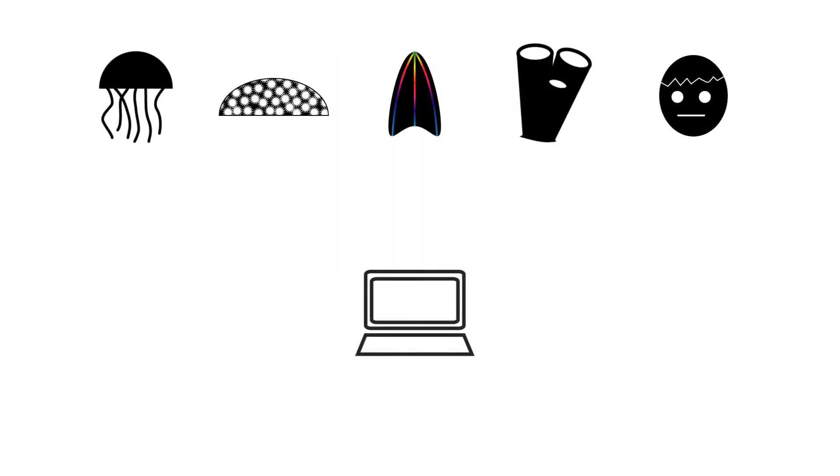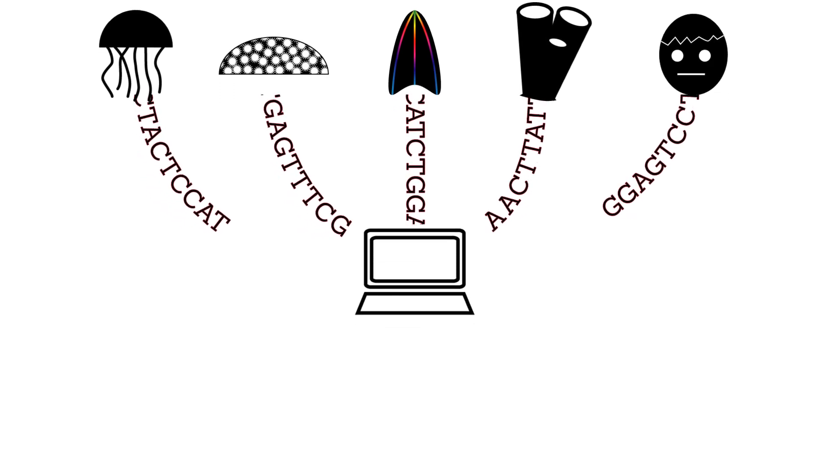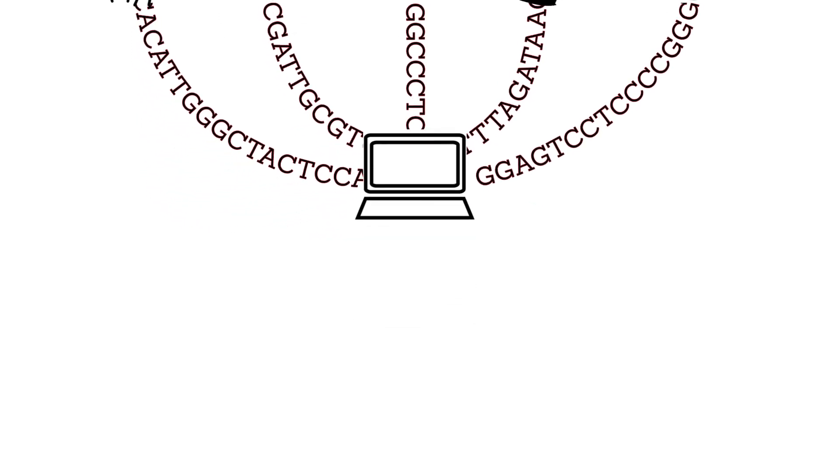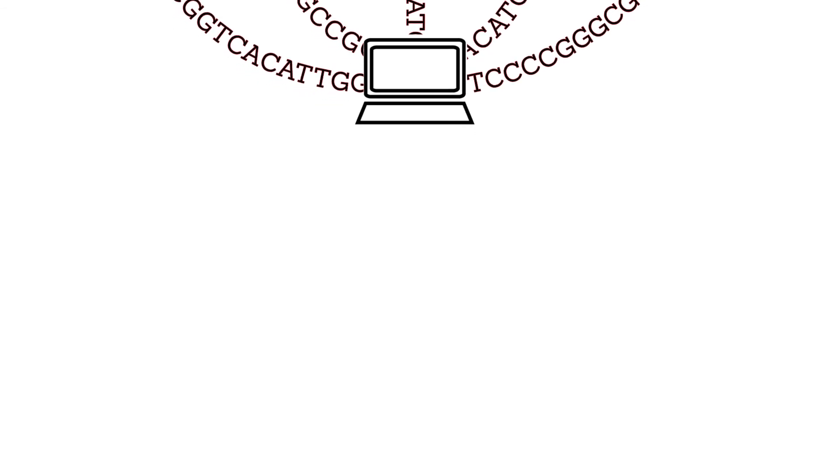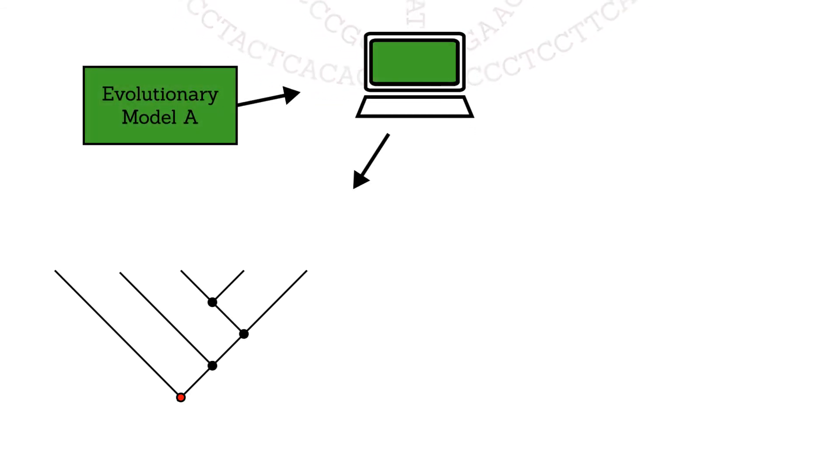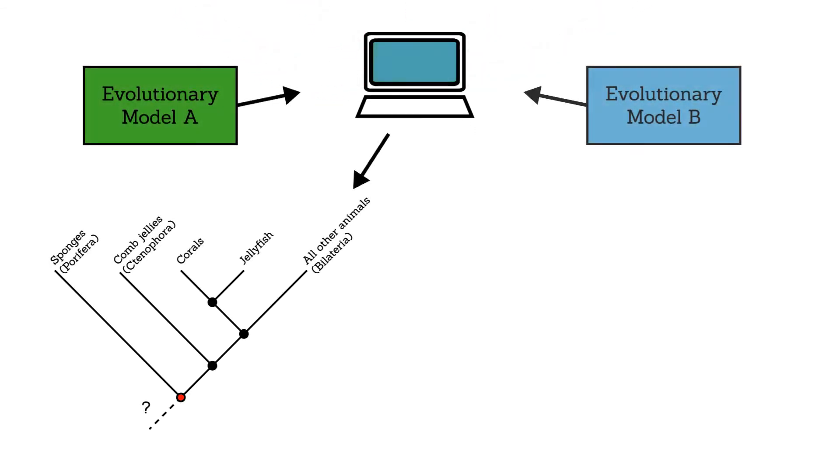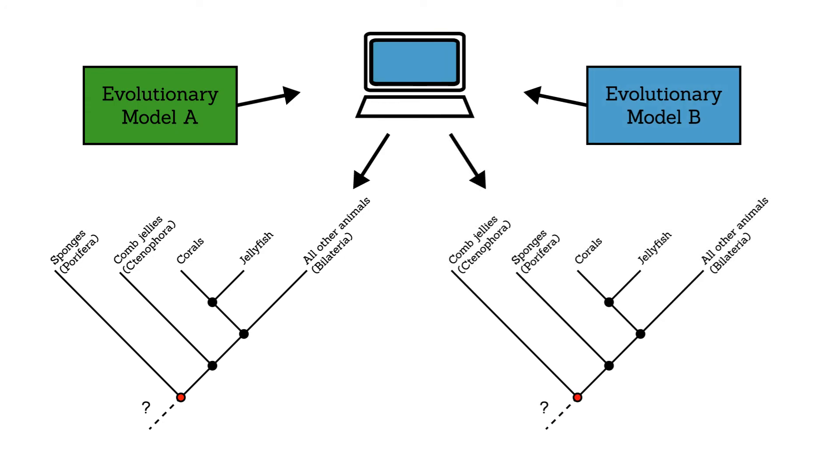To answer this question, phylogenomicists first have to read and compare the genomes of modern species. Then, to produce a phylogeny, they need to tell their computers the rules of evolution. These models of evolutionary change can be hugely complicated, and it is these that are ultimately responsible for the different results that previous studies have produced.